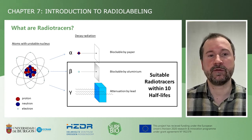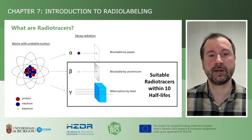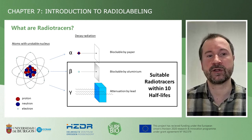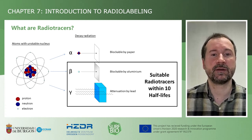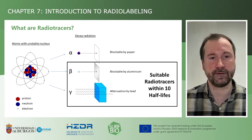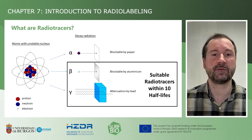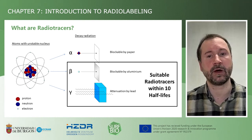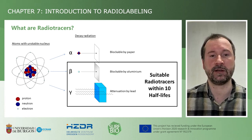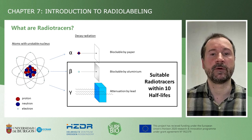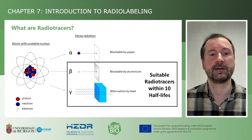That can be the emission of an alpha particle, which is a helium nucleus, a beta particle, which is an electron or positron, or the emission of gamma radiation. Of these decay radiations, the beta and gamma emissions can easily leave and be detected outside of the sample. This makes them suitable as radiotracers within about up to 10 half-lives of the respective radionuclide, after which almost all the original radionuclides have decayed, producing no detectable signal anymore.